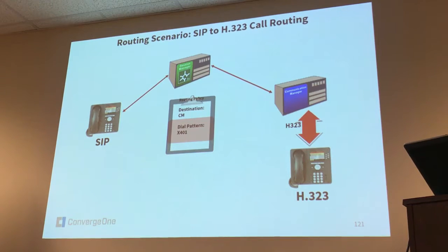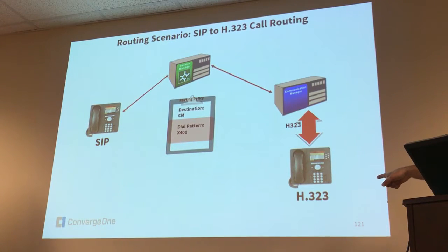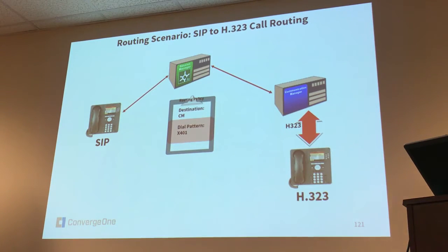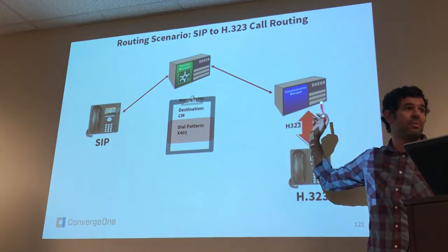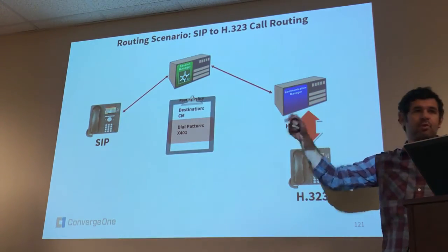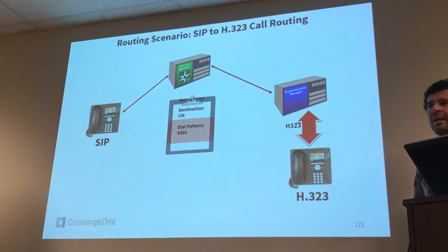This is what we're going to be doing in the first lab exercise for routing - calling from the SIP phone to the H.323 phone. The H.323 phone should be able to call the SIP phone without routing in Session Manager, because the destination would have a user profile. All you need is for CM to be able to route to Session Manager, and from there Session Manager routes to the SIP phone. Try that when you do the lab.